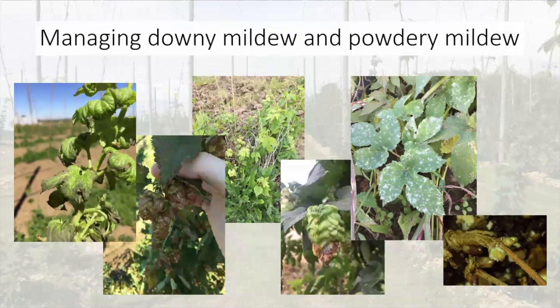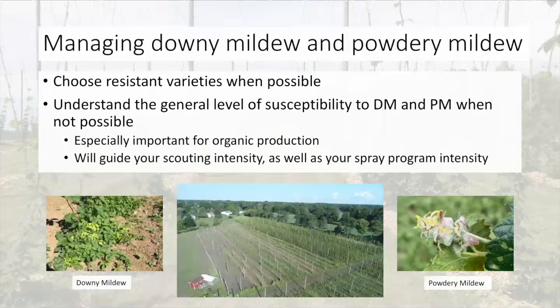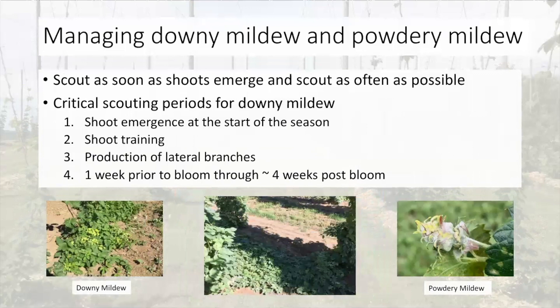Now that you've properly identified what disease is in your yard, it's important to know how to properly manage both. The first and foremost way to make your life easier is to choose resistant varieties when possible — while also considering varieties that are in demand in the brewing industry. Always give consideration to the resistance or susceptibility of varieties you're planting so you go in with realistic expectations of how intensive your disease management program will need to be. This is especially important for organic production and will also guide your scouting intensity and spray program intensity.